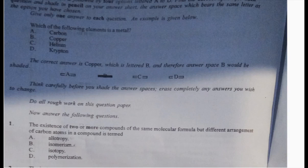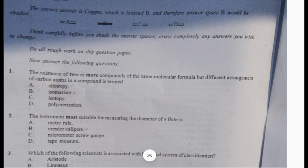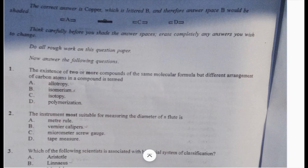Today we're going through the 2023 integrated science exam. Number one: the existence of two or more compounds of the same molecular formula but different arrangements of carbon atoms in a compound is called B, isomerism.